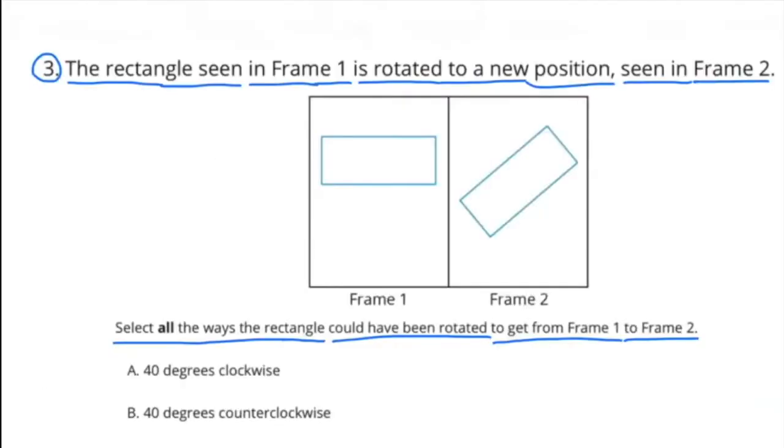Number 3. The rectangle seen in frame 1 is rotated to a new position, seen in frame 2. Select all the ways the rectangle could have been rotated to get from frame 1 to frame 2.